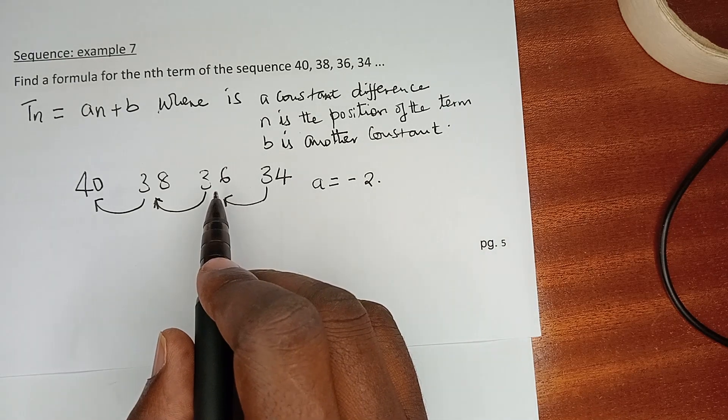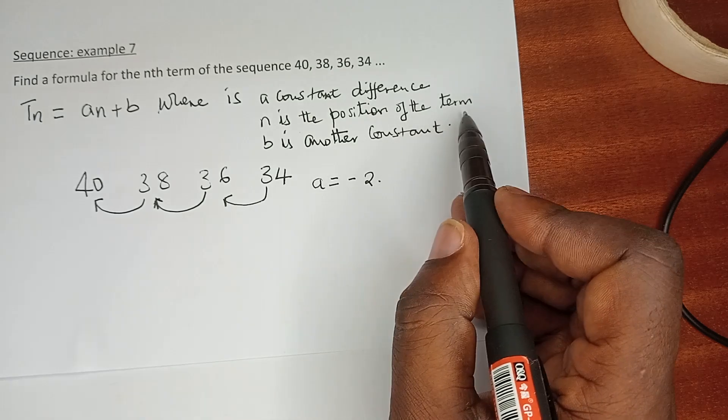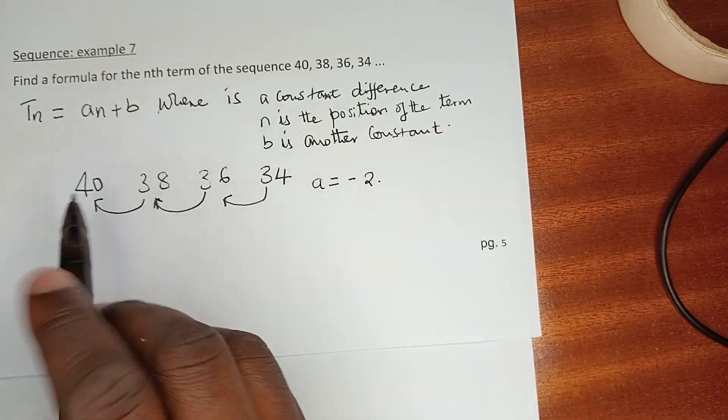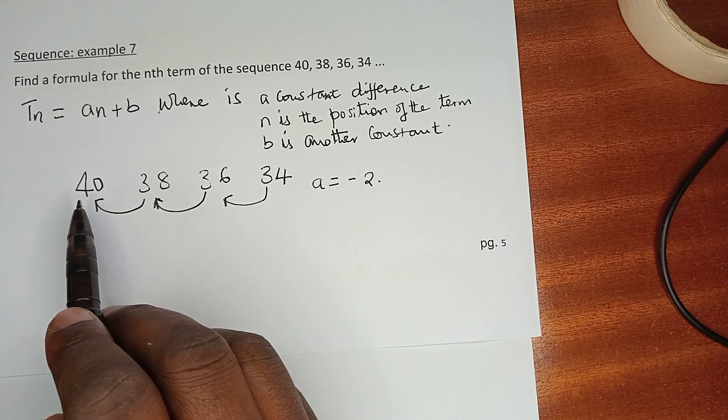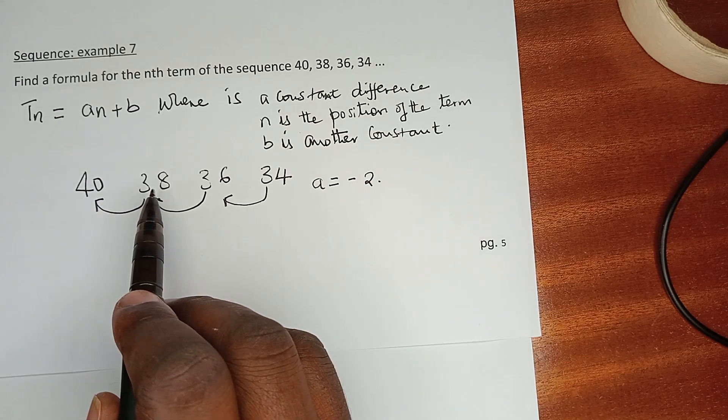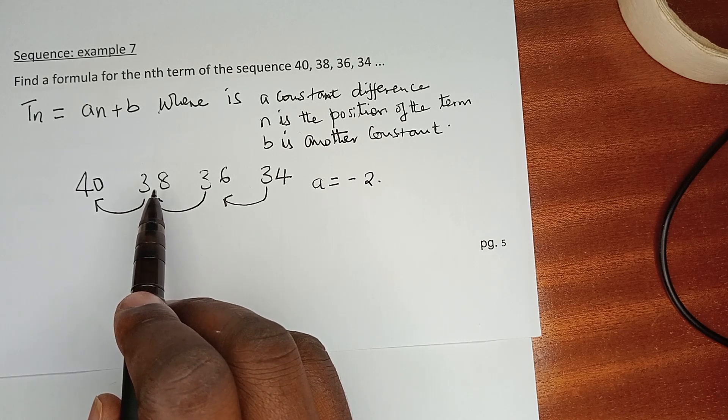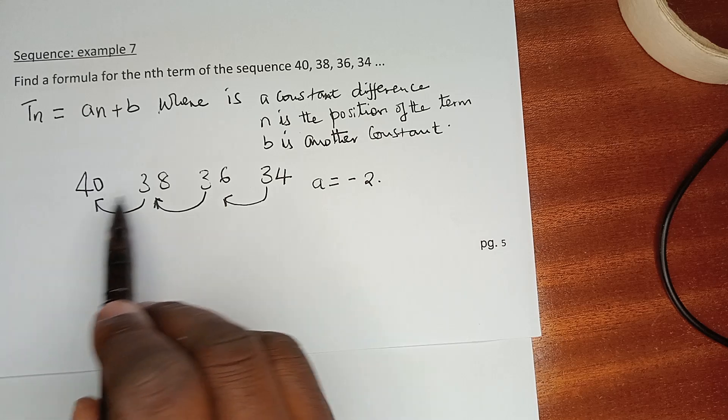Where n is now the position of the term. For example, if you are going to use 40, then n is 1 because 40 is the first term of the sequence. If you are going to use 38, then you are going to use n being equals to 2 because 38 is in the second position of the sequence.